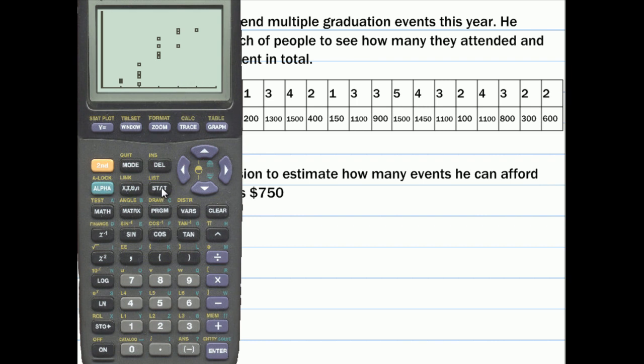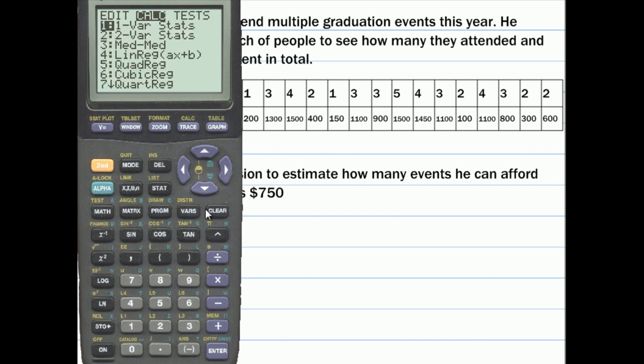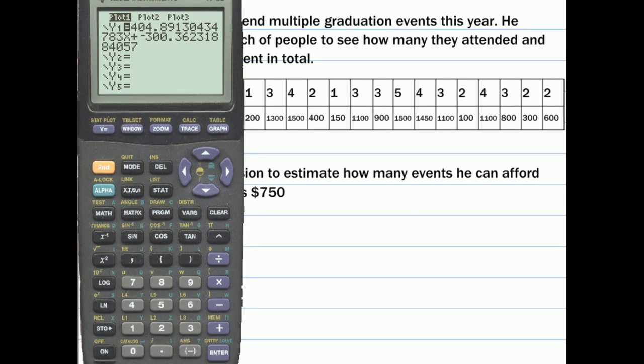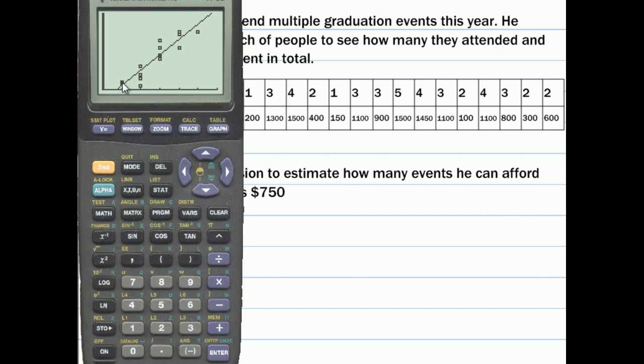The next thing we need to do is find the linear regression function to fit this data. So we go down to linear regression, enter. Now this will find a function that fits all the data points that we just put into the stat. If we want to paste this function into Y equals, we put VARS into YVARS function Y1. This will take the linear regression function and put it into Y1. So we've found our linear regression equation, and here's our graph. The linear regression function fits the data.